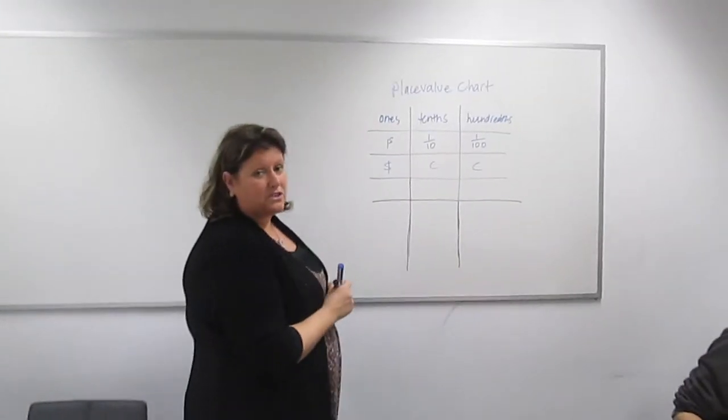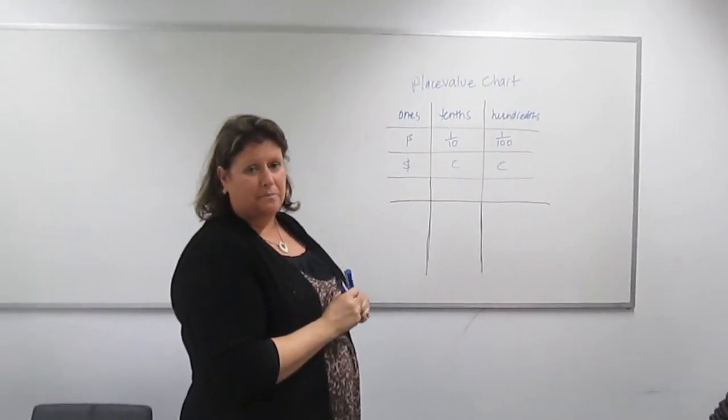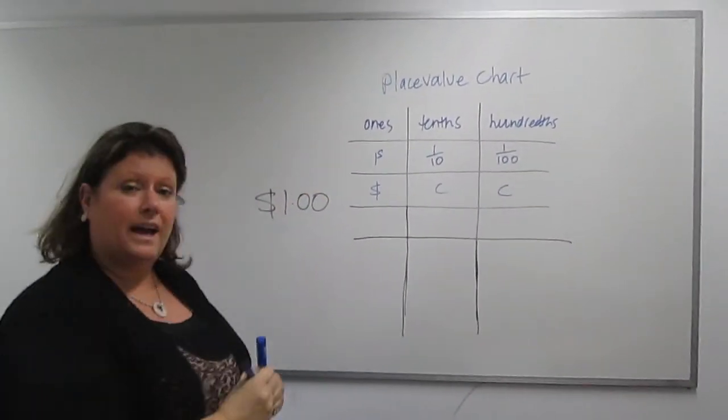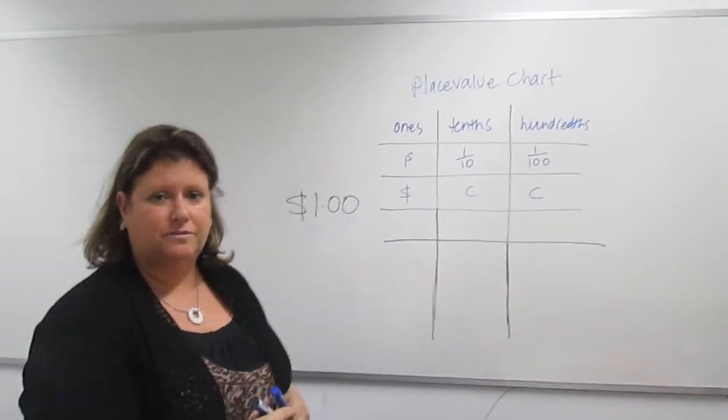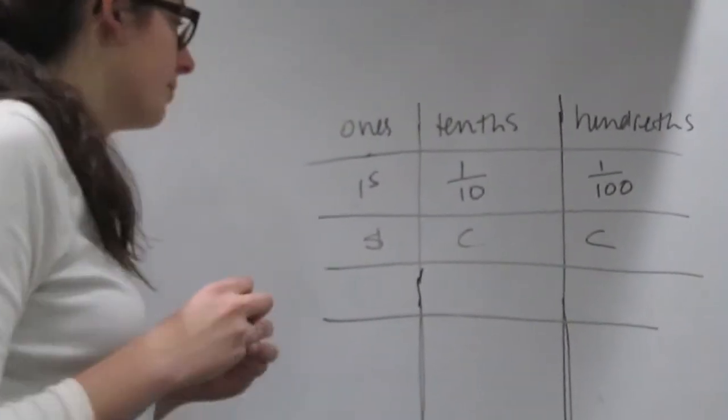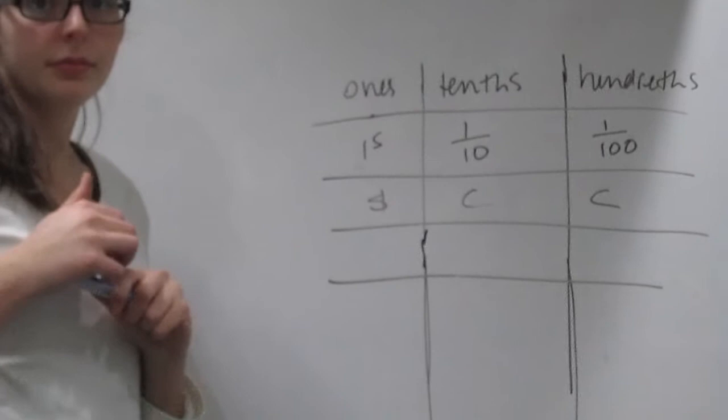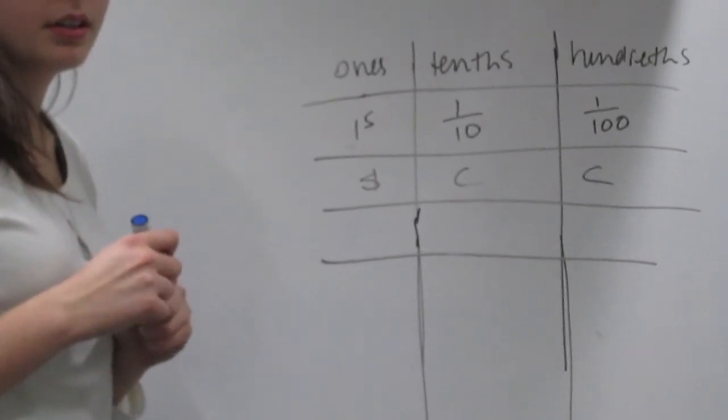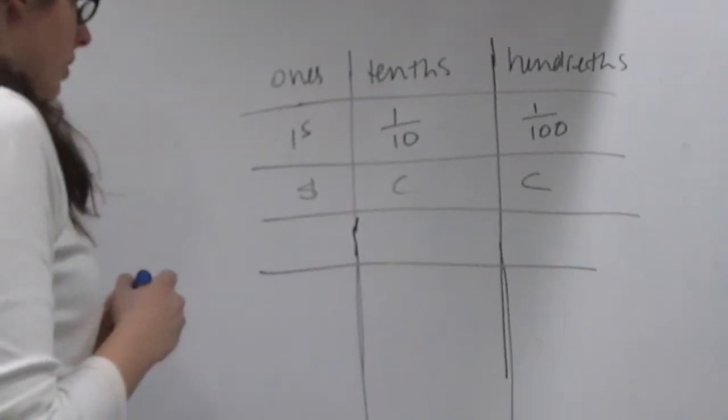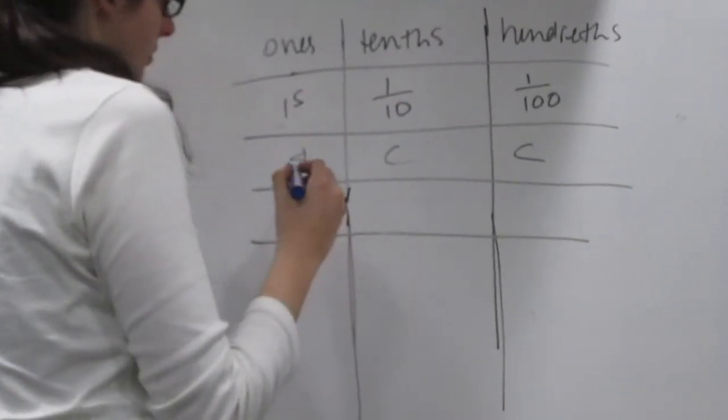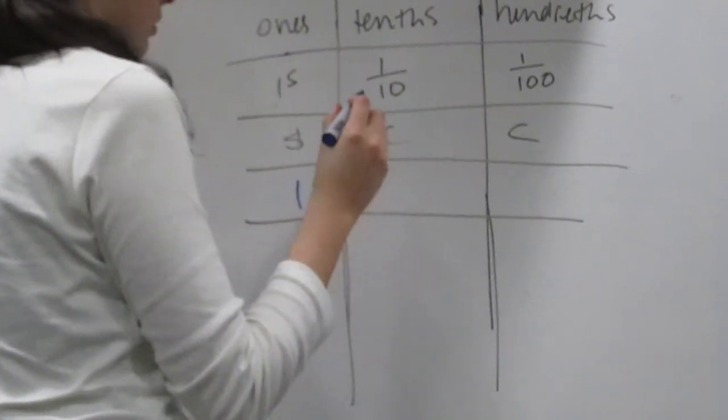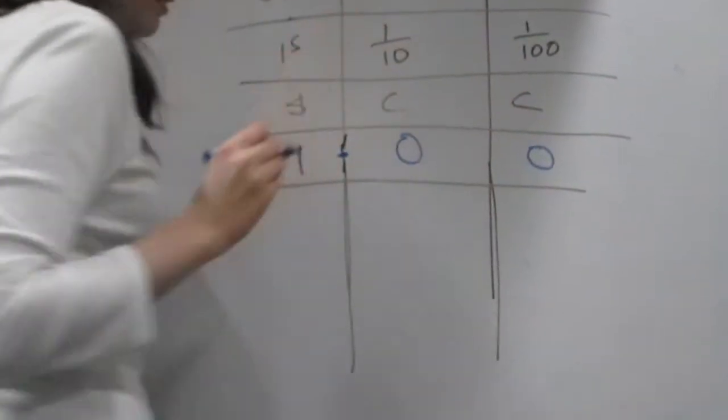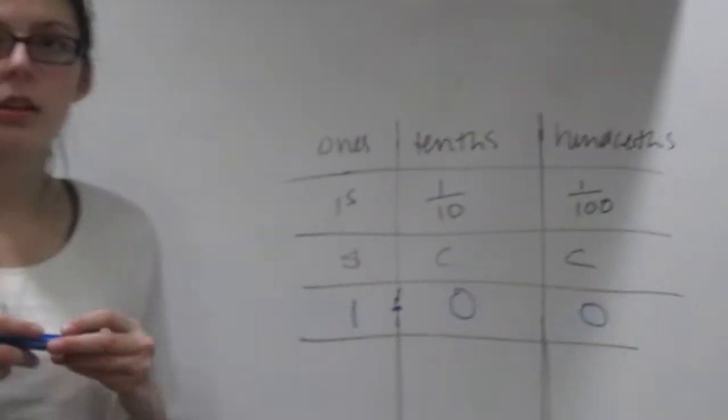So now that we know that one dollar is made up of 10 ten-cent pieces, how would you write that in the place value chart? How would you write one dollar as a dollar and as a decimal in the place value chart?